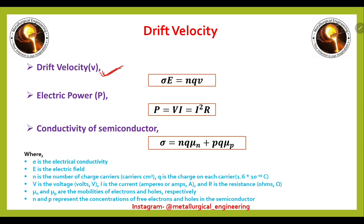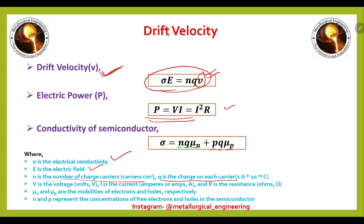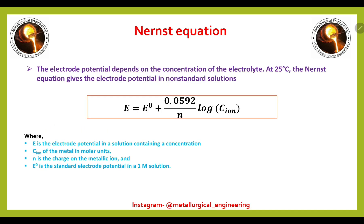Now we will see drift velocity, defined as the average velocity between collisions of two electrons: σ = NQV. Electric power P = VI = I²R. The conductivity of a semiconductor is: σ = nqμ_n + pqμ_p, where σ is the electrical conductivity, n and p are concentrations of free electrons and holes, q is the charge on each carrier, and μ_n and μ_p are the mobilities of electrons and holes respectively.